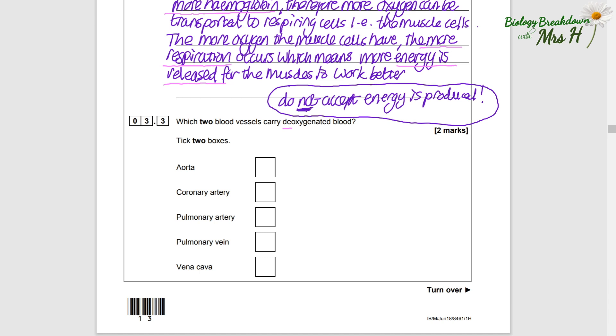3.3: Which two blood vessels carry deoxygenated blood? So that means blood without oxygen in it. And we can remember this little rhyme, it's not really a rhyme, but arteries take blood away from the heart, A and A, and veins bring blood into the heart.